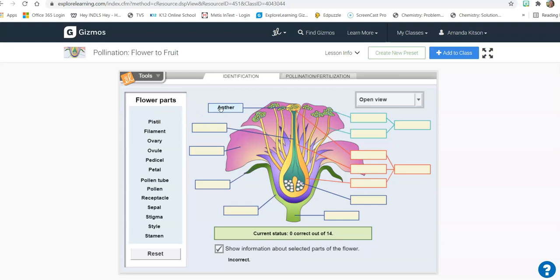So what you do is you grab a vocabulary term and you put it in a box to label the parts. And if you get it right, if you've checked this box, it'll tell you some information about that structure. If you get it wrong, it'll say incorrect. So then you try another box and it still says incorrect at the bottom. So I'll try another box. And once you get it correct, it'll tell you what the function of that part of the flower is.